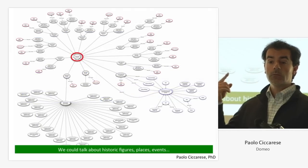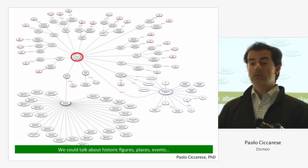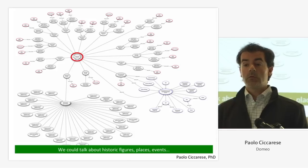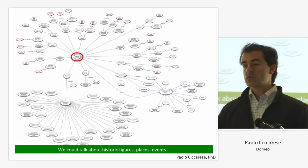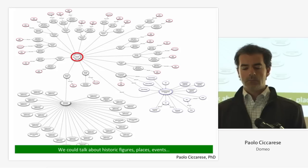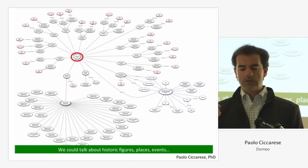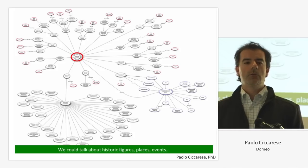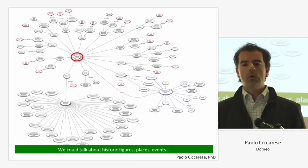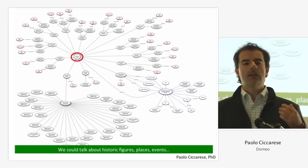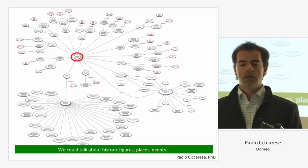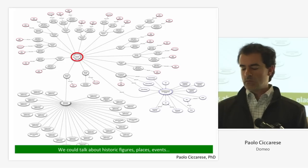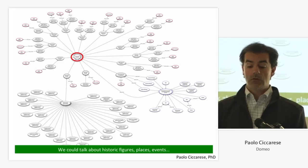To give you an idea: this is the network of one single protein — all the variants called isoform cleavage products and so on. Scientists are interested in pointing to one of those bubbles because all Alzheimer's research is about APP. If you just say this page is about APP, you find everything, so it's useless. You want to point to one specific node and be able to search accordingly.